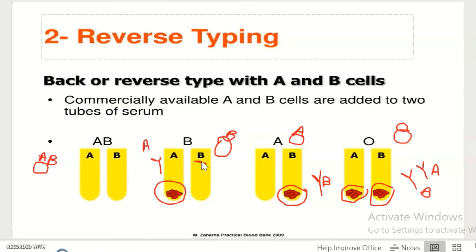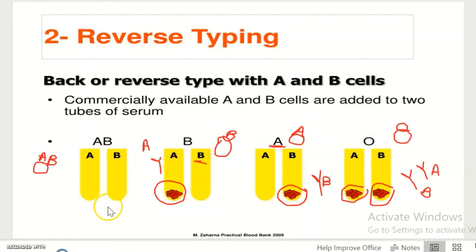Likewise, you should do the same with other reactions. If you see agglutination in B cells, you should say that this patient is group A. And if you see agglutination in both A and B, it means the patient is group O. And if you see no agglutination in either A or B, it means the group is AB.